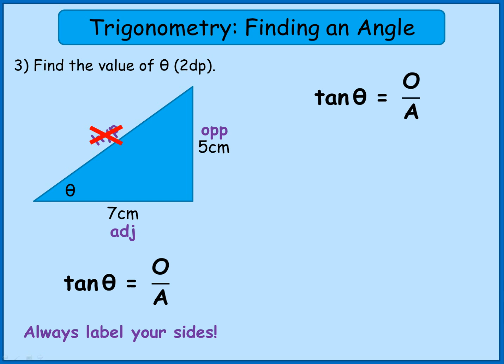Pop in the information we know. So the opposite is 5, so that will go instead of O. The adjacent is 7, that will go instead of A. So it's 5 over 7.